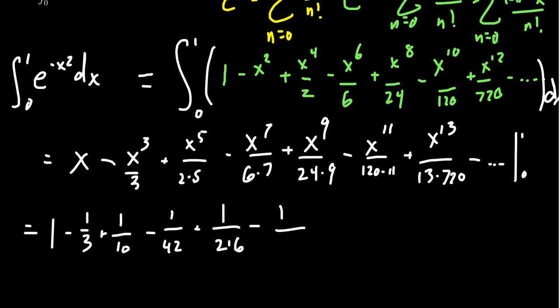Then we're going to get minus 1 over 120 times 11 which is 1,320. Next, we get 1 over 13 times 720, which is 9,360. And we can keep on going if we need to. This is the exact answer. This is not an estimate right now.